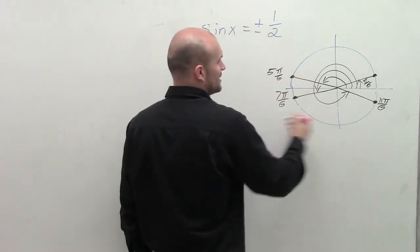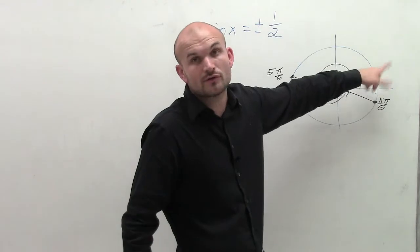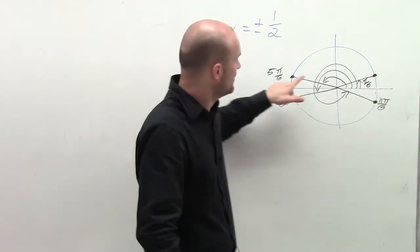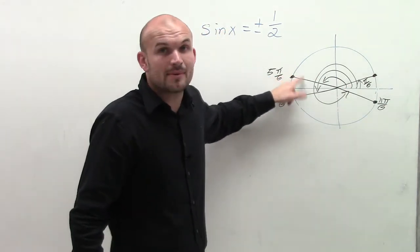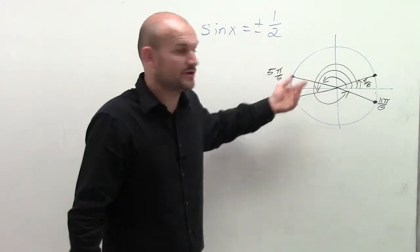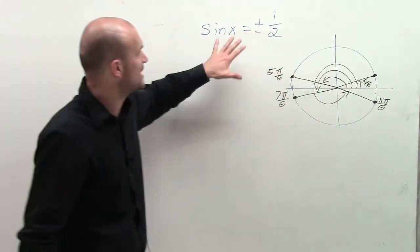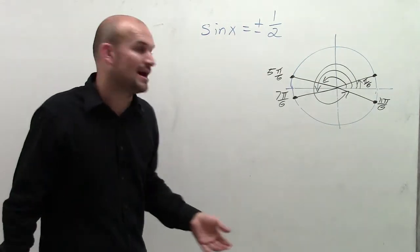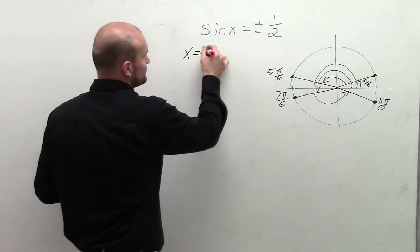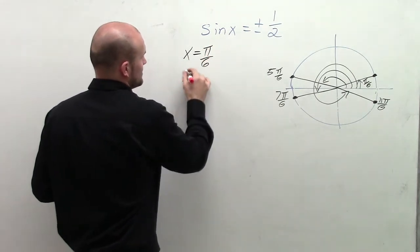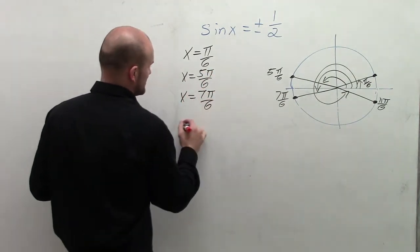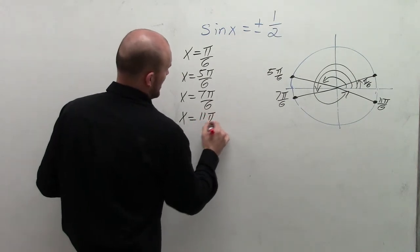Looking at each point: this point is (√3/2, 1/2). This one is (√3/2, −1/2). This one is (−√3/2, 1/2). And this one is (−√3/2, −1/2). So here are all the solutions where sine of my angle equals plus or minus 1/2. We can write x = π/6, x = 5π/6, x = 7π/6, and x = 11π/6.